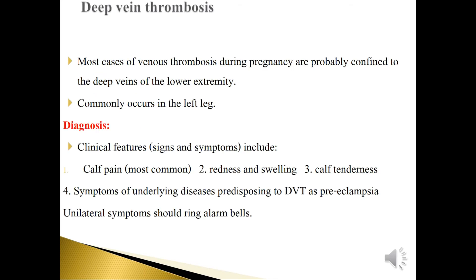Most cases of venous thrombosis during pregnancy are confined to the deep veins of the lower extremities and commonly occur in the left leg. Diagnosis is based on clinical features: signs and symptoms include calf pain (most common), redness, swelling, calf tenderness, and symptoms of underlying disease predisposing to DVT such as preeclampsia. Unilateral symptoms should raise alarm.